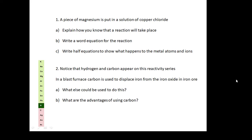Number two: notice that hydrogen and carbon appear on the reactivity series. Sometimes they behave like metals - with hydrogen it's not surprising if you look at where it is on the periodic table. In a blast furnace, what we use is carbon to displace iron from iron oxide. What else could displace iron? But we don't - we use carbon. What are the advantages of using carbon instead of aluminium, magnesium, or calcium? Why is carbon used in a blast furnace?